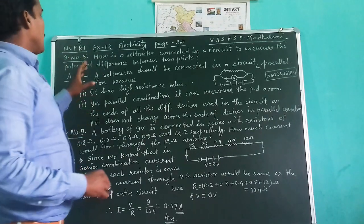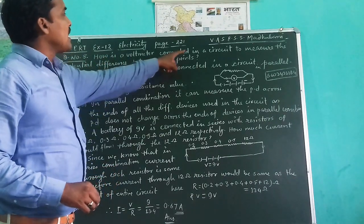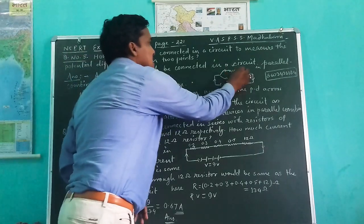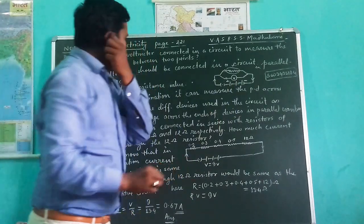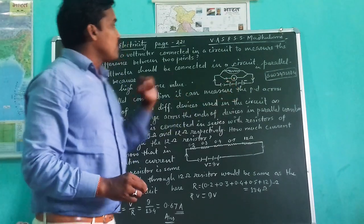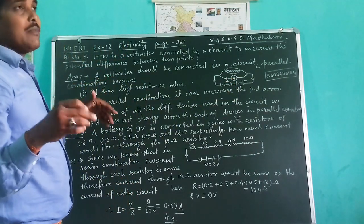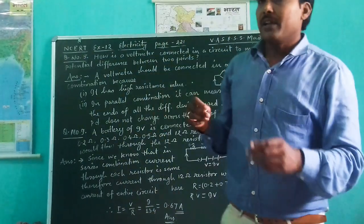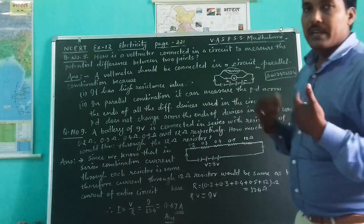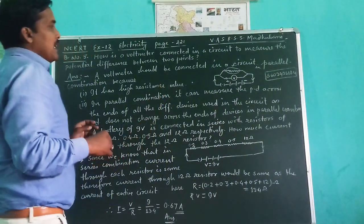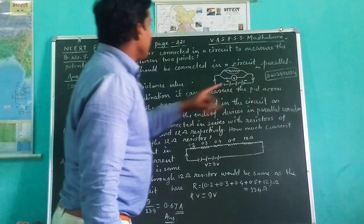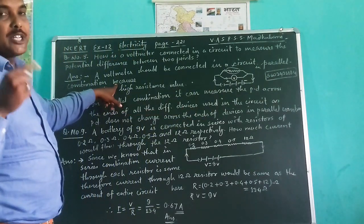We have question number 5. Question number 5 says that, How is a voltmeter connected in circuit to measure the potential difference between two points of the circuit? We have to measure the potential difference across the end of this resistor. So we have to connect this. You know very well that I have mentioned already in the previous video that how a voltmeter and how an ammeter are connected, should be connected in the circuit.